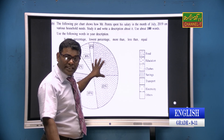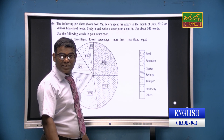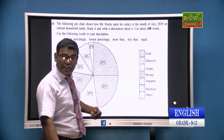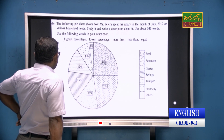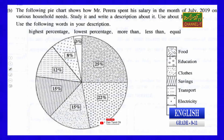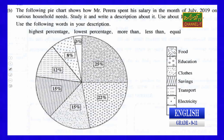The following pie chart shows how Mr. Pereira spent his salary in the month of July 2019 on various household needs. Study it and write a description about it. Use about 100 words. Use the following words in your description: highest, highest percentage, lowest percentage, more than, less than, equal.